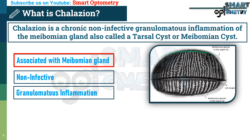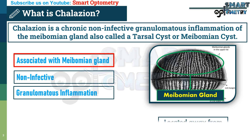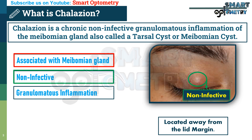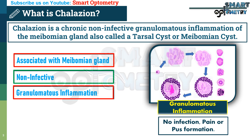The meibomian gland is located in the tarsal plate, in the middle of the eyelid. So the location of chalazion will be in the middle of the eyelid, not at the lid margin unlike blepharitis and stye. Non-infective means there will be no infection, so there will be no pain or pus formation. Granulomatous inflammation means it occurs due to formation of a granuloma by the immune system to prevent leakage of lipid from the blocked meibomian gland.